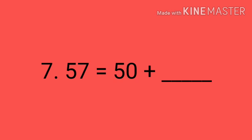Question number 7. 57 equals to 50 plus dash. How much? Yes, it is 7. So 57 is equal to 50 plus 7.